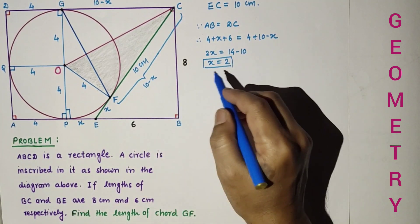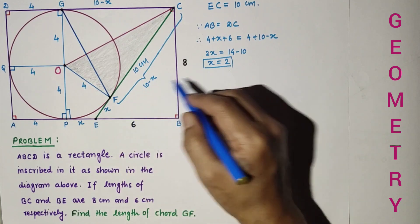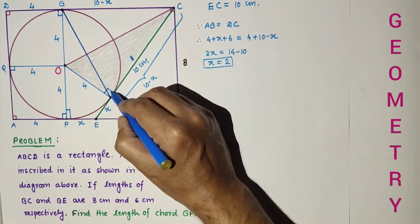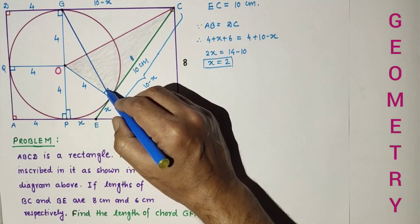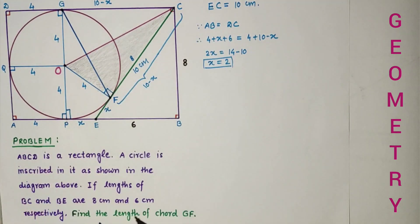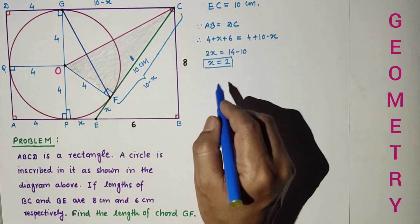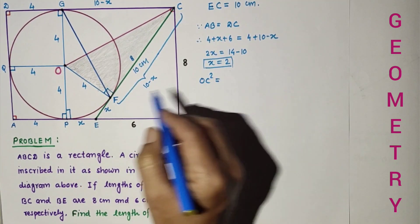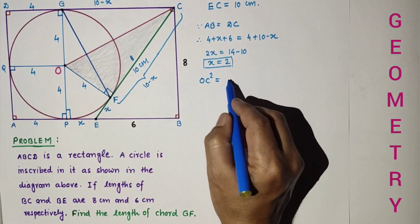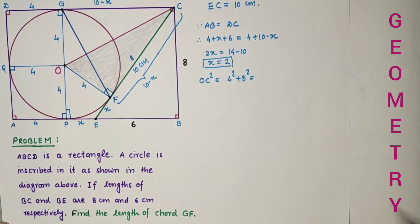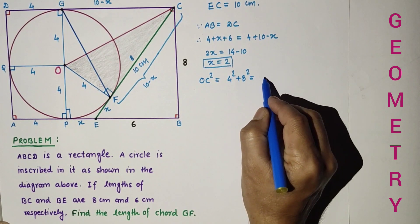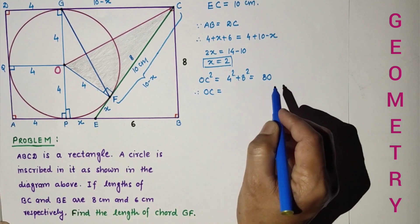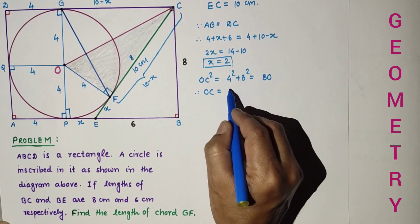After getting X as 2, CF is 8. Since radius and tangent at the point of contact are 90°, we can use the Pythagorean theorem to find OC. OC² equals 4² plus 8² equals 16 plus 64 equals 80, so OC equals √80 equals 4√5.